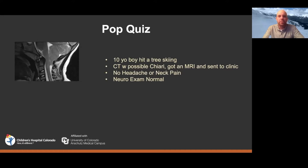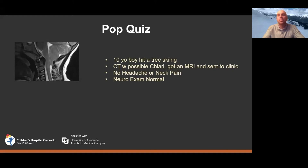You can see he's got about a six or eight millimeter tonsillar herniation, no syrinx is visible. They said he's got a Chiari and he needs to go see neurosurgery. He shows up in clinic with no symptoms, no headache, no neck pain, neurologically normal. He's recovered from his concussion and just wants to go back to skiing. So you ask yourself: this is an incidental Chiari with no syrinx — do I need to operate on this patient?